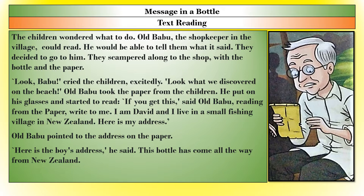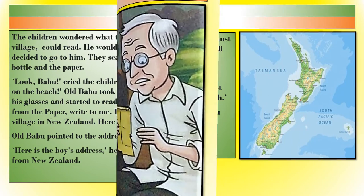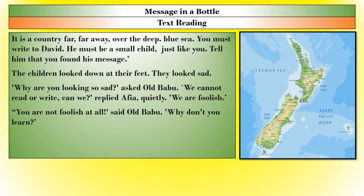Old Babu took the paper from the children. He put on his glasses and started to read. "If you get this," said Old Babu, reading from the paper, "Write to me. I am David and I live in a small fishing village in New Zealand. Here is my address." Old Babu pointed to the address on the paper. "Here is the boy's address," he said. "This bottle has come all the way from New Zealand. It is a country far, far away over the deep blue sea."